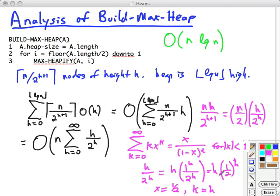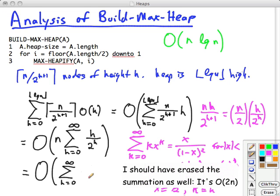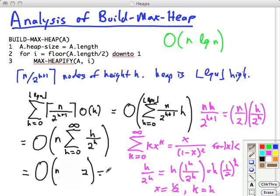When we apply the formula that way, we're going to get this. So x is 1 half over 1 minus 1 half squared, which is 1 half squared. So 1 half over 1 quarter, this whole thing equals 2. And we have an n there. So n times this thing we've just transformed, which is big O of 2n, which is big O of n.